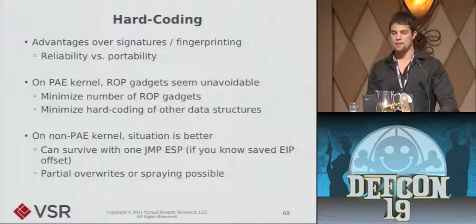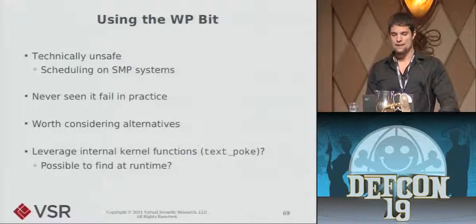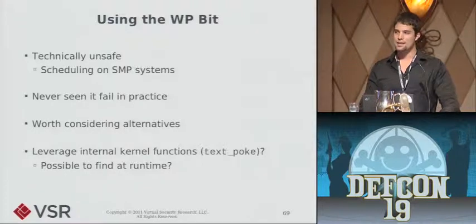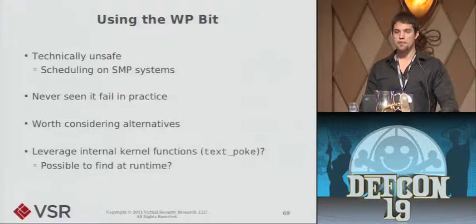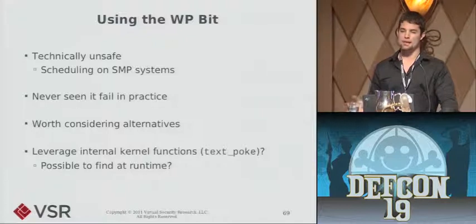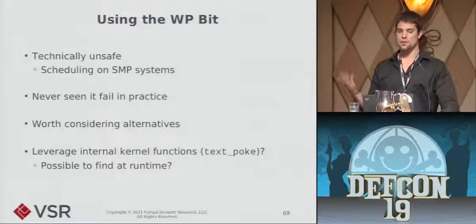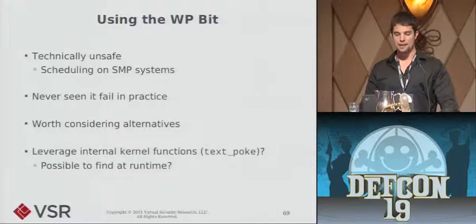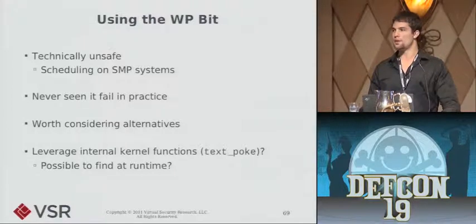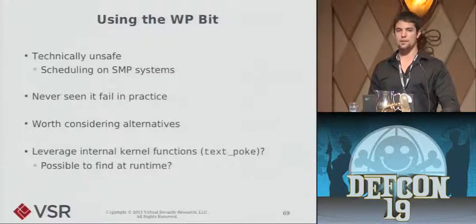The PAE makes exploitation significantly more difficult. The next limitation is using the CR0 write-protect bit — it's fun and easy, but technically not the safest. It's a per-CPU bit, so on a multi-processor system there's a small risk: you flip the bit to write to read-only memory, and if that thread gets scheduled out and scheduled back in on the other processor before you make the write, it would try to write to read-only memory and crash. I've never seen or heard of that ever happening — it's a very small race window — but it's possible and worth considering alternative ways to write to read-only memory. It might be possible to leverage kernel functions that already exist to do this in a safe way, and the challenge then becomes finding those at runtime.